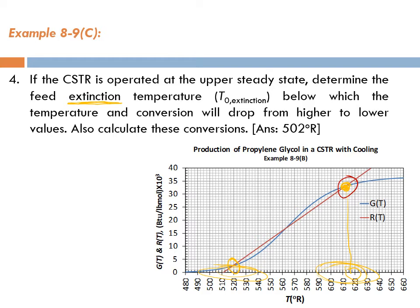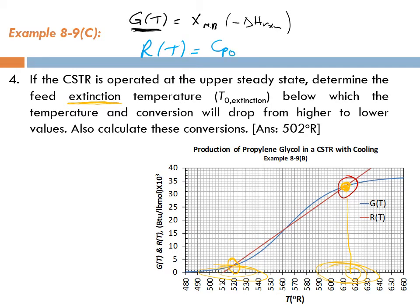Let's go back to the gT and RT terms. The gT term is not a function of the feed temperature. Remember: gT equals X, which is calculated from material balance times minus delta H reaction. So the gT curve is not a function of the feed temperature. However, RT is. For RT, we wrote the equation: RT equals CP0 times (T minus T0) minus Ua divided by FA0 multiplied by (TA minus T).